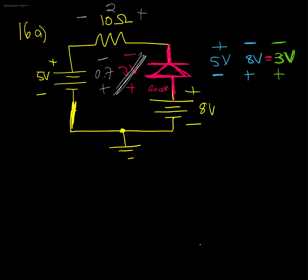And the rest of that three volts is going to be dropped across this resistor, so two point three volts is going to be dropped across that resistor.